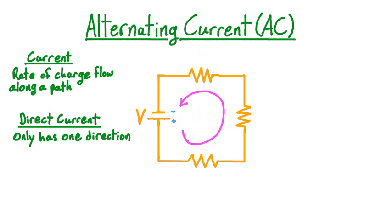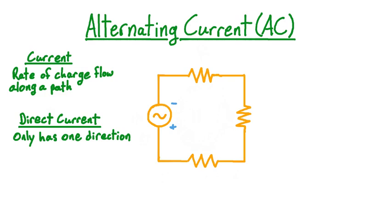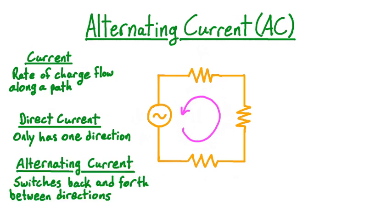There is a different kind of source, called an alternating voltage source, that can smoothly change between a positive terminal on top and a negative terminal on bottom, and a negative terminal on top and a positive terminal on bottom, just like our two orientations of the cell. Therefore, the EMF from the alternating voltage source will switch back and forth between driving the current clockwise and counterclockwise around the circuit. We therefore call such a current an alternating current, because it switches back and forth between the two possible directions.